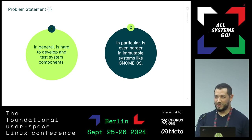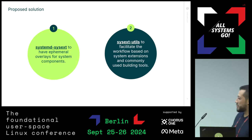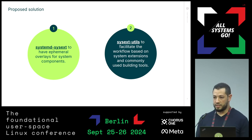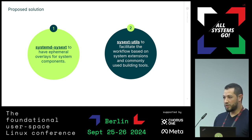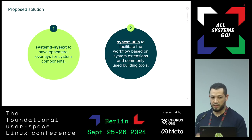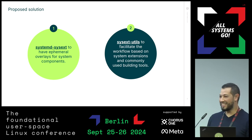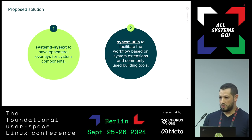So what's our solution? It's SysX. We use systemd-sysext to have ephemeral overlays for system components. They're ephemeral in that we can remove them at any time. We could have them in /run, where a simple reboot will drop them and you get back to your working system, or we could have them in /var and then you need to delete them manually. So what we did is develop SysX utils, which are a set of scripts to build these system extensions.